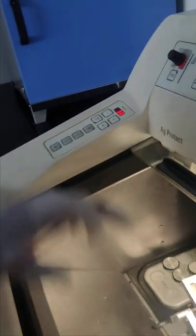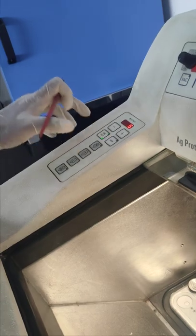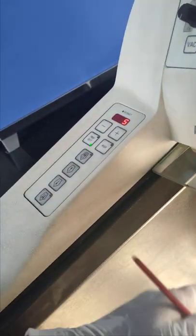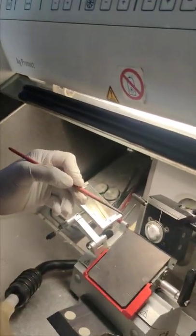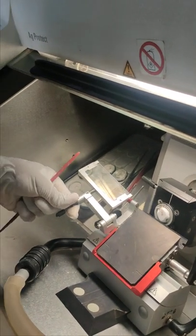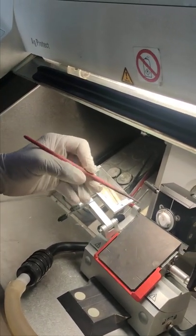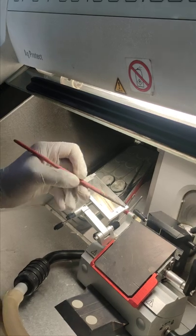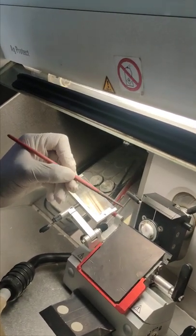Once the tissue is trimmed, we section at 5 microns. We can either apply an anti-roll plate or use a brush to take the section.